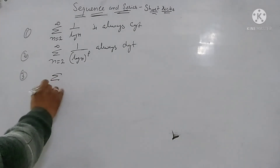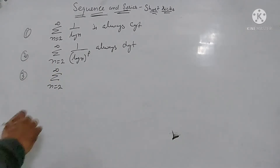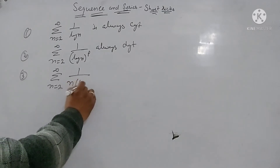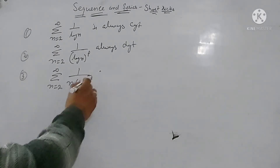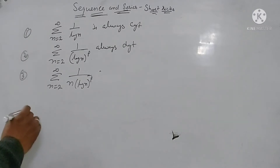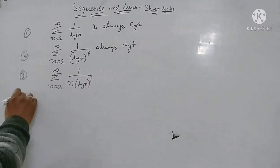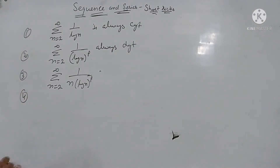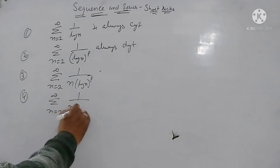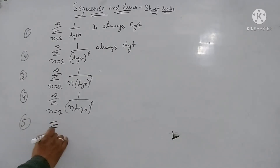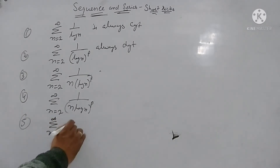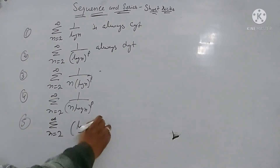Third: the series n varies from 2 to infinity of 1 upon n·(log n)^P. Fourth: the series n varies from 2 to infinity of 1 upon n·(log n)^P — convergent or divergent depending on P. Fifth: the series n varies from 2 to infinity of log n upon n raised to power P.